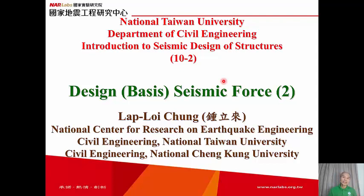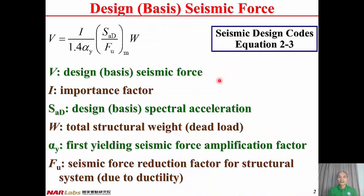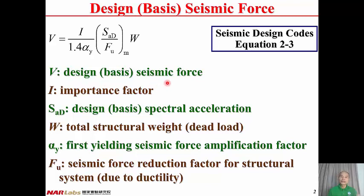In this lecture, we will continue talking about design basis seismic force. Design basis seismic force is the seismic force at the design basis earthquake level for the design of structures. From seismic design code equation 2-3, the design seismic force is: V = I / (1.4 × αy) × (SAD / FU modification) × W. V is the design basis seismic force, I is the importance factor, SAD is the design basis spectral acceleration, and W is the total structural weight — the dead load of the structure.